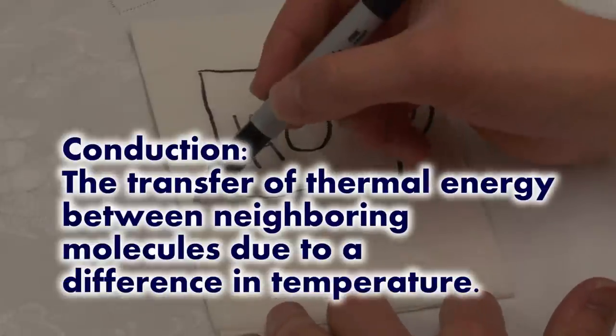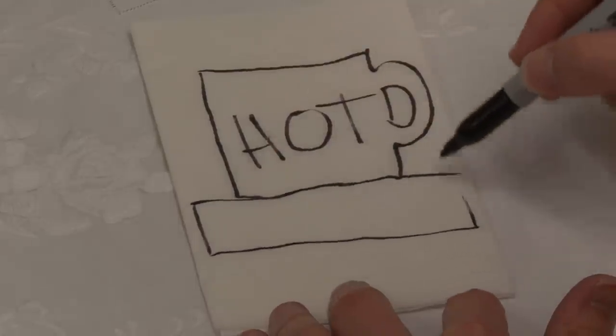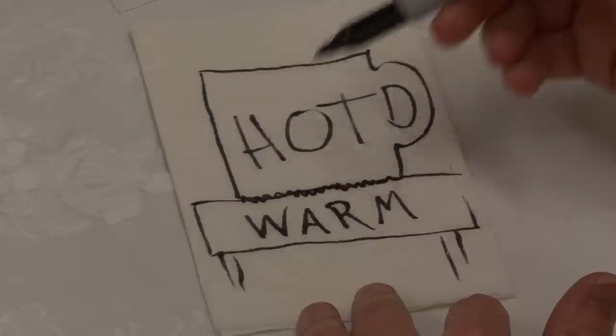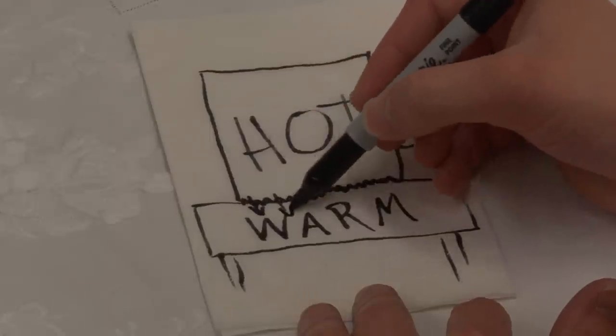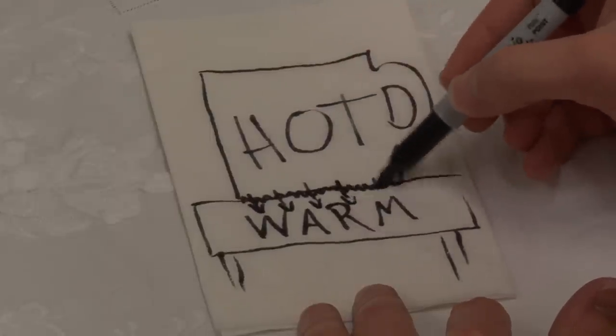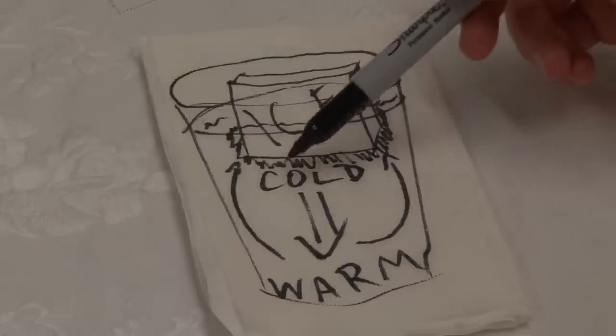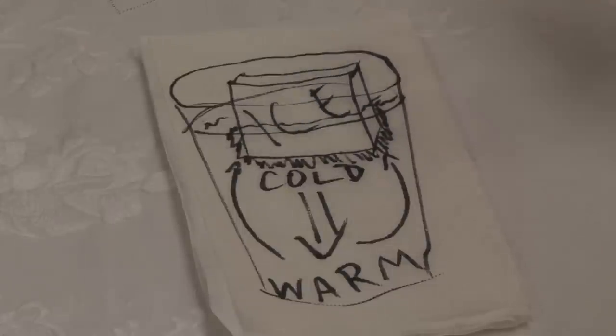So what's conduction? It's the transfer of thermal energy between neighboring molecules due to a difference in temperature. For example, suppose you had a warm mug and you set it down on the table — the tabletop under the mug gets warmer because the mug is in contact with it and warmer than the table. The same thing happens with the water around the ice. The key thing is that this transfer of thermal energy doesn't require any mass to move around.